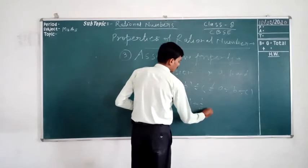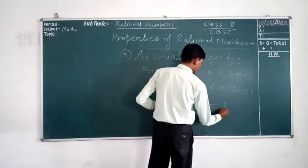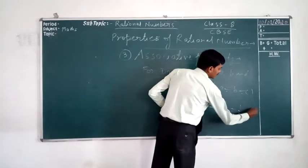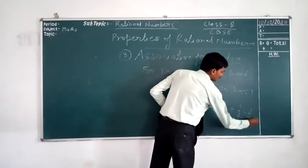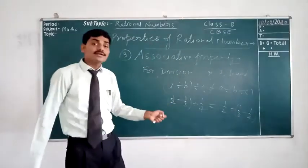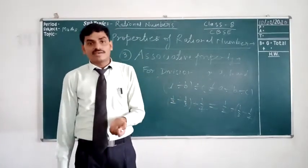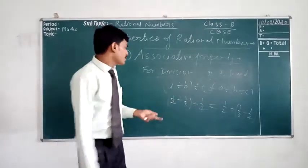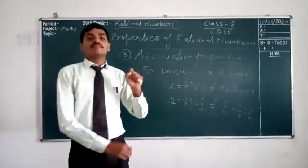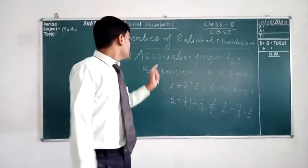Let's take an example: (1/2 ÷ 1/3) ÷ 1/4 and 1/2 ÷ (1/3 ÷ 1/4). After solving, you will get that the answers will not be the same. So we can say that rational numbers are not associative for division.